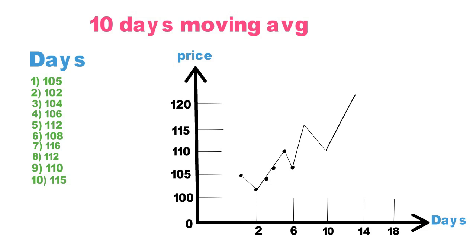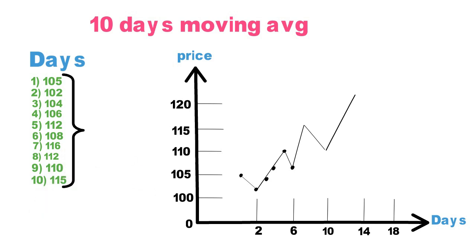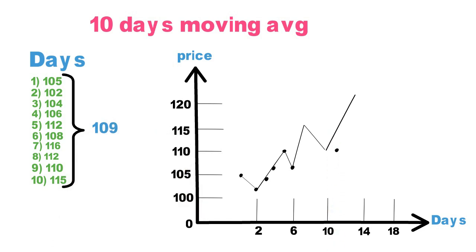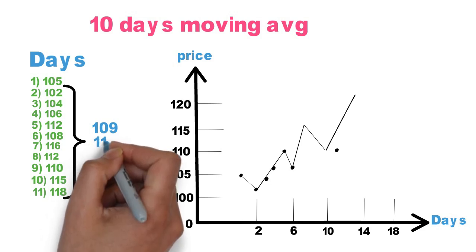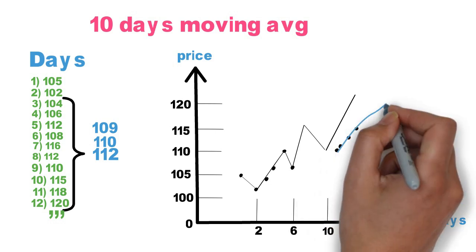We add all 10 days' prices and divide by 10 to get the average — the answer is 109. Next, we take the average from day 2 to day 11, ignoring day 1, because we need a 10-day average. On day 11 we get 110, on day 12 we get 112, on day 13 we get 114, on day 14 we get 116. We keep moving the range forward — that is why we call it a moving average.